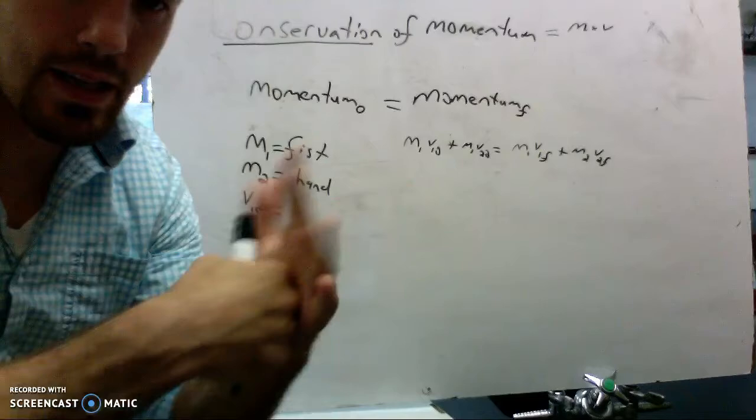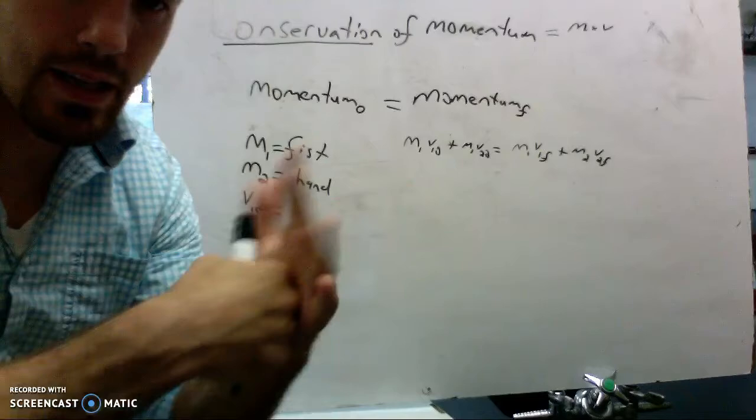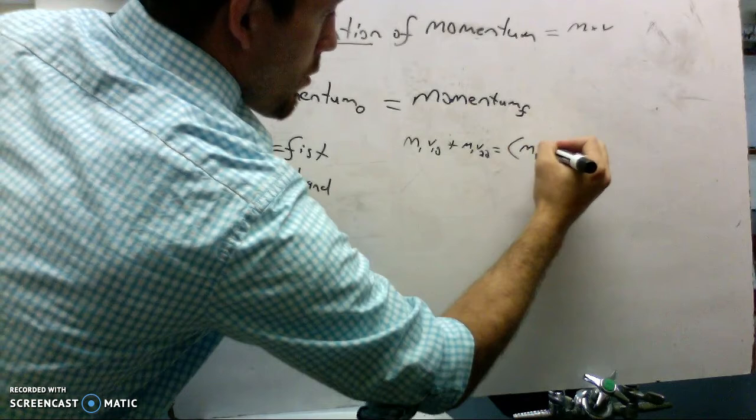In some cases, we find that the objects hit and they stay together. And if that happens, we can change this a little bit. And we can recognize that the two masses are together, and they only have a final velocity, just one final velocity. So I'd like to change this and just make that a VF. Hope this helps. Have a nice day, everybody.